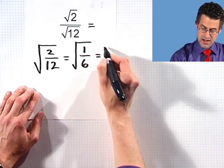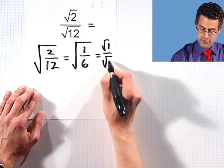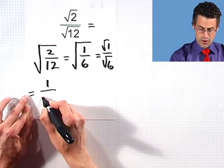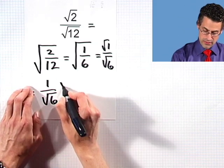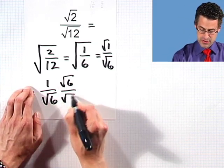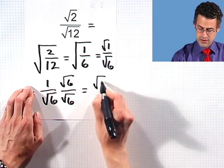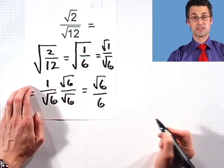Then I can break it up and write it as square root of 1 over square root of 6. Well, the square root of 1 is just 1, so I have 1 over the square root of 6. Now, if I want to rationalize the denominator, I'd multiply the top and the bottom by the square root of 6, and I'd get square root of 6 over 6. No problem.